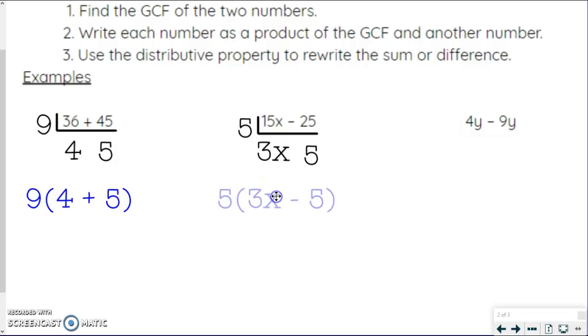25 divided by five just leaves me with five. So then when I go to write that as the new expression, my GCF is on the outside of the parentheses. And what's left over is on the inside. It's 3x and it's minus this time, five.